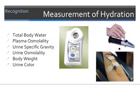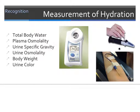Hydration can be objectively measured by calculating total body water with plasma osmolality, urine-specific gravity, urine osmolality, body weight change, or urine color. Body weight and urine color are the most convenient ways to track hydration. Some organizations restricting rapid weight loss in sports like wrestling use urine-specific gravity to determine hydration status at initial weigh-in and body composition measurement in order to determine a safe weight loss plan that must be adhered to in order to maintain eligibility.